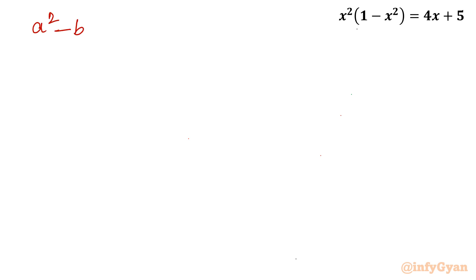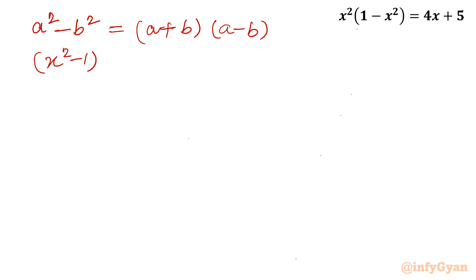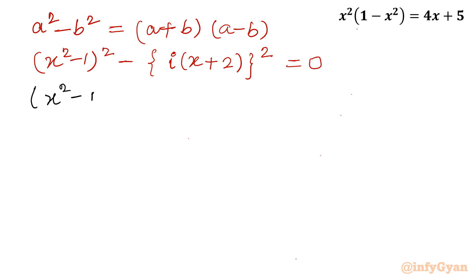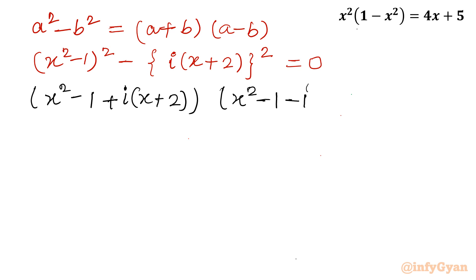The identity is: a squared minus b squared equals (a plus b)(a minus b). So I write the equation as (x squared minus 1) whole squared minus (i times (x plus 2)) whole squared equal to 0. Applying the formula, the first bracket is (x squared minus 1 plus i(x plus 2)), and the second bracket is (x squared minus 1 minus i(x plus 2)), equal to 0.